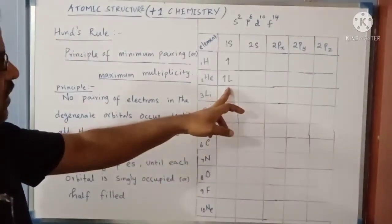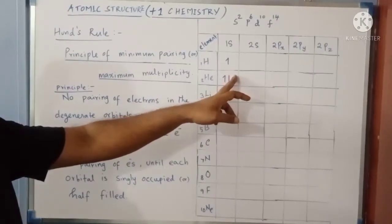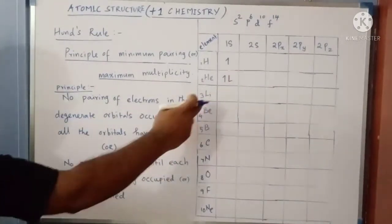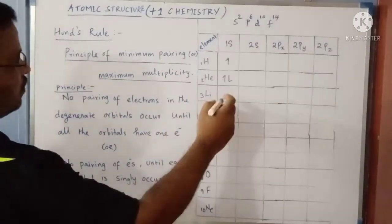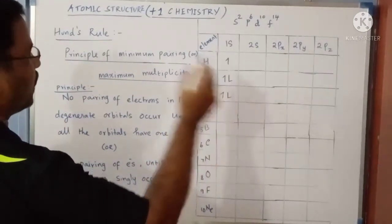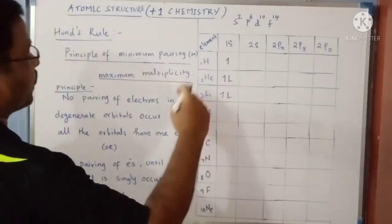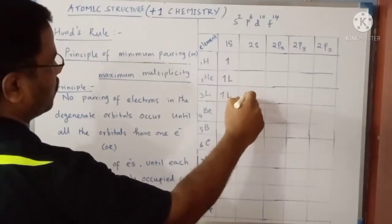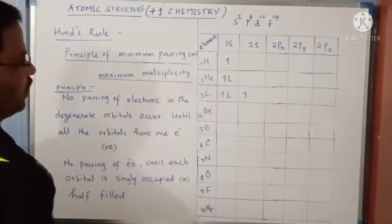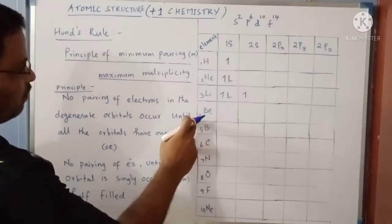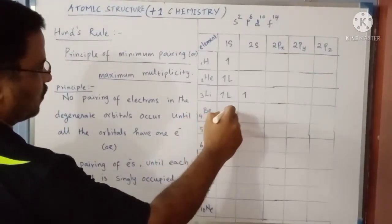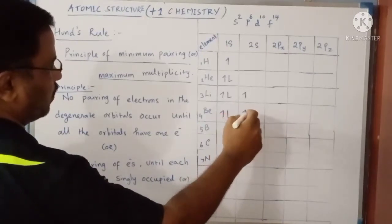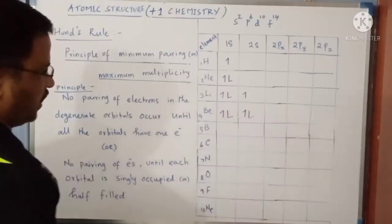For lithium with atomic number 3, the first and second electrons are added in the 1s orbital. Since 1s is now completely filled, the third electron goes to the 2s orbital. For beryllium with atomic number 4, the first and second electrons fill 1s, the third electron goes to 2s, and the fourth electron is added to the same 2s orbital.